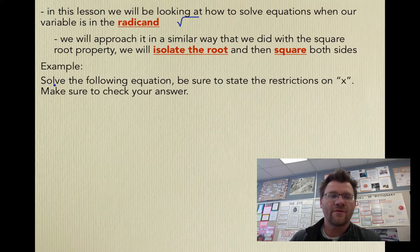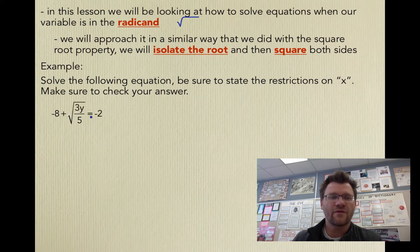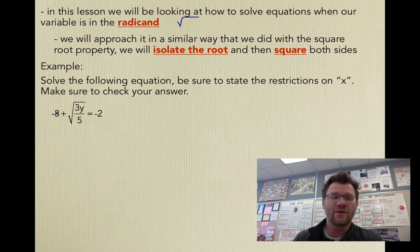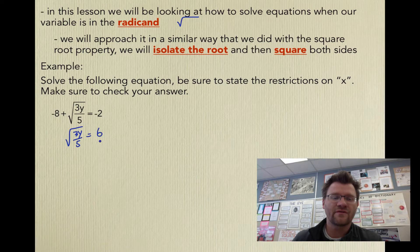Our example says: solve the following equation. Be sure to state your restrictions on x and make sure to check your answer. Here's our first equation: negative 8 plus the square root of 3y over 5 equals negative 2. We're going to isolate the root — move the negative 8 over — and we get root (3y/5) equals positive 6.